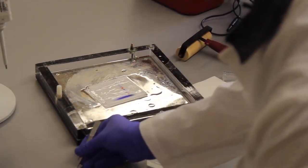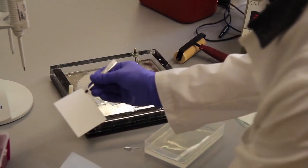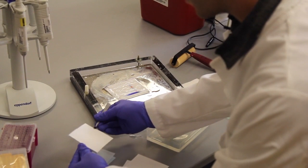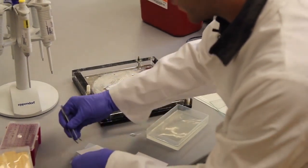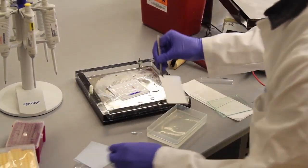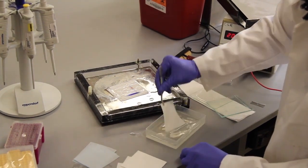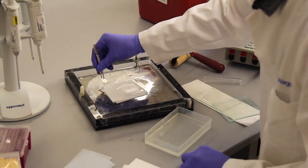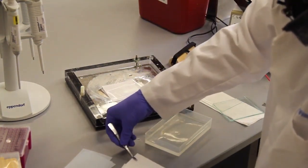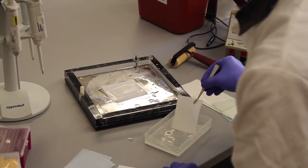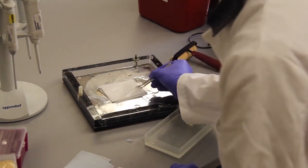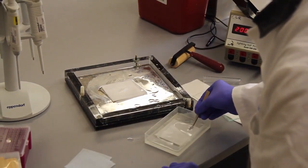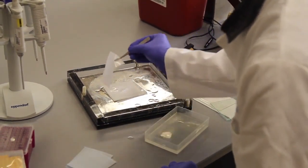Next up is the nitrocellulose membrane that usually comes protected within a few other sheets of paper. Make sure to remove those first, otherwise the transfer will not work. Again, pre-soak it and add it on top of the gel. And to finish it off, three more pieces of Whatman paper. The main purpose of the Whatman paper is to protect the entire sandwich from the current going through and to help ensure that the current goes through evenly.